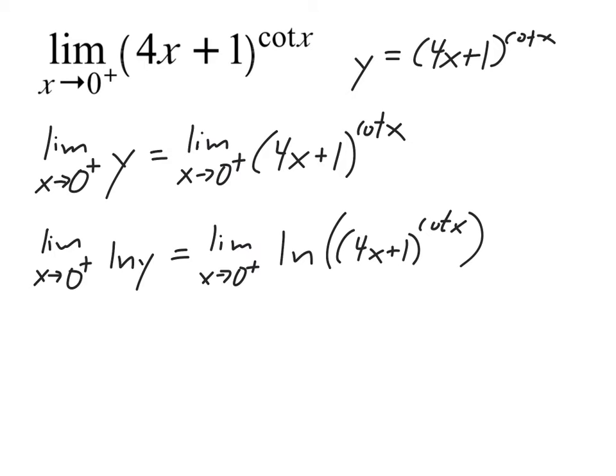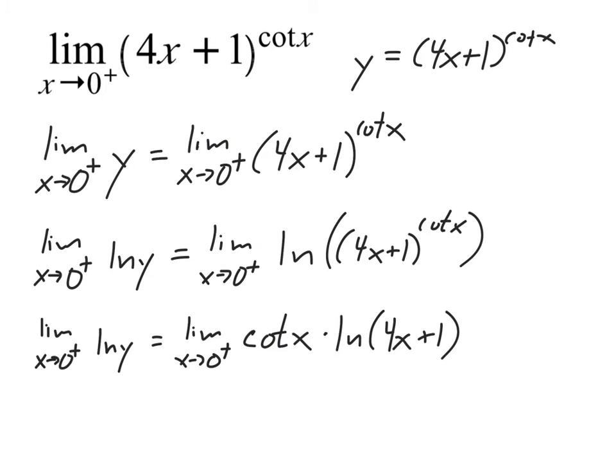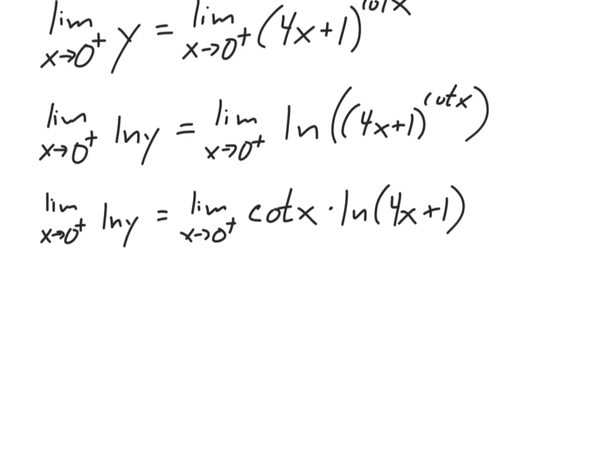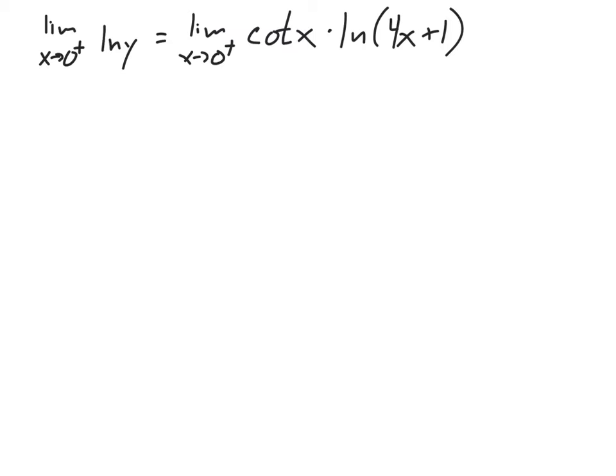We take the natural log of both sides because it allows us to grab the exponent and pull it outside of the natural logarithm using our logarithm rules. So nothing changes on the left-hand side. What does change is I now pull down that cotangent of x, and that's now times the natural log of 4x plus 1. Now, in order to use L'Hôpital's rule, I'm going to have to turn this into a fraction.